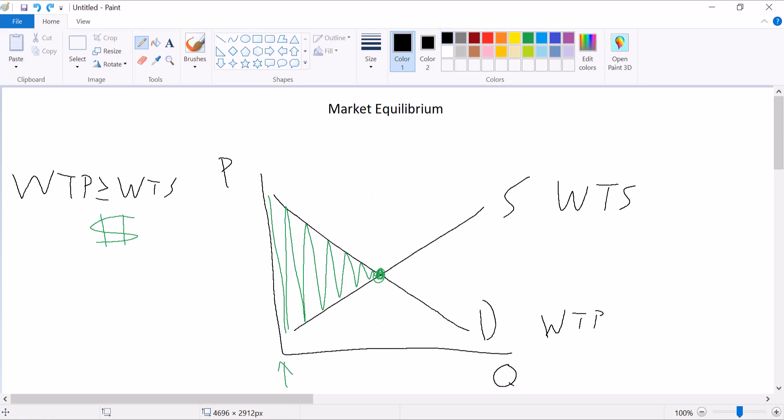And so that point is going to become very important to us. Now, why do we not sell more than this? Let me give it a label first, actually. We'll call it Q star. It's going to be our equilibrium, but I'll explain why in just a minute.